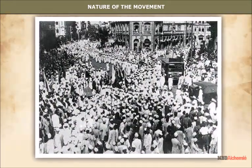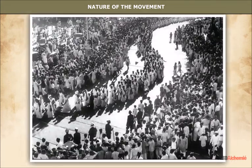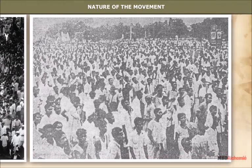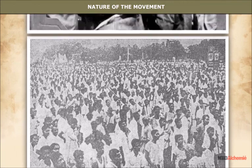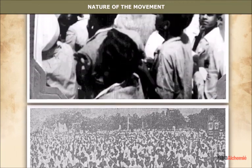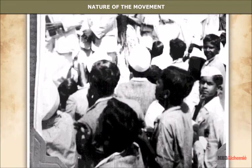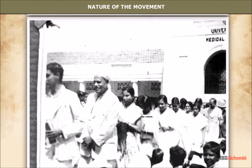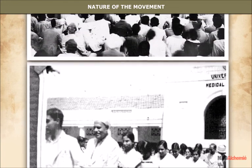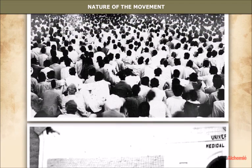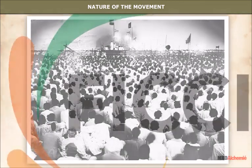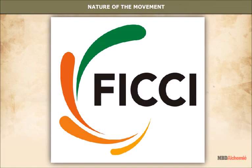Nature of the Movement: Mostly peasants and handicraft workers participated in this movement. A wide swath of the urban population — students, handicraft workers, factory workers and peasants — took part in hartals, picketing shops selling foreign goods, and boycotts of local bazaars. The business classes campaigned against colonial control over the Indian economy and supported the civil disobedience movement. To organize business interests, they formed the Indian Industrial and Commercial Congress in 1920, and the Federation of Indian Chambers of Commerce and Industry (FICCI) in 1927.